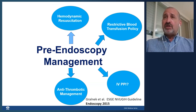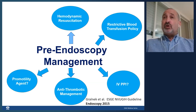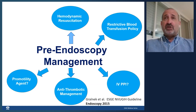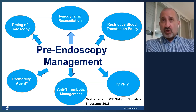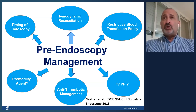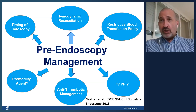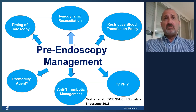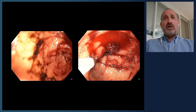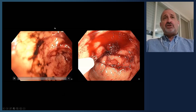We need to think about antithrombotics or anticoagulants — this patient uses once-daily low-dose aspirin. Should we hold or continue? Should we use a promotility agent like IV erythromycin if there's blood or clots in the stomach? Regarding timing, the general recommendation is to perform upper endoscopy within 24 hours of presentation. Earlier emergent endoscopy has not been shown to improve outcomes and can actually be detrimental.